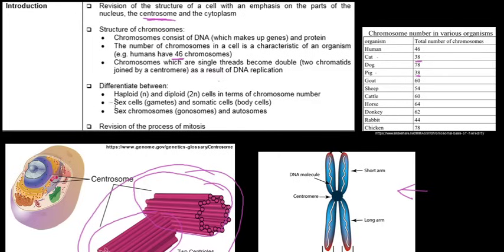You also need to be able to differentiate between haploid and diploid cells in terms of chromosome number, sex cells which are the gametes and somatic cells known as body cells, and then also sex chromosomes known as the gonosomes and autosomes, and then revision of the process of mitosis.